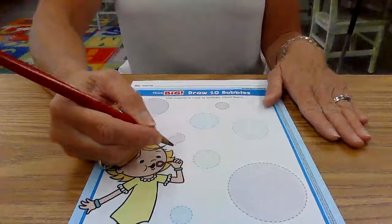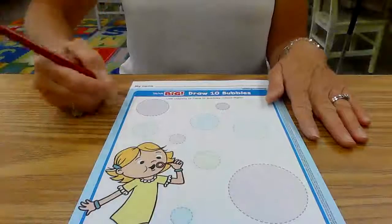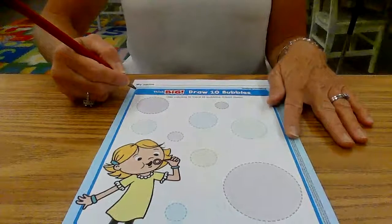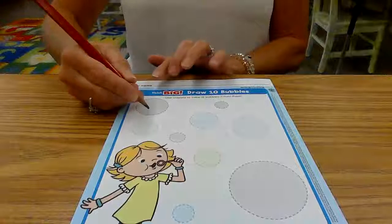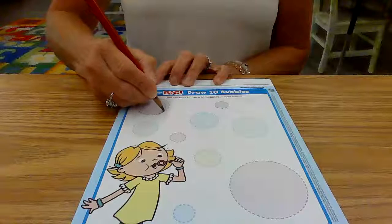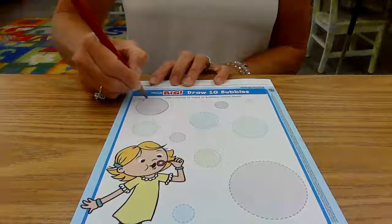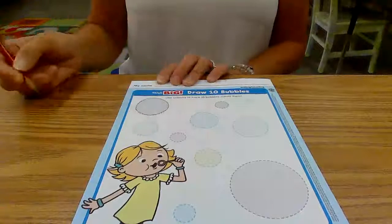So we're going to rest our pencil on our hand. And let's see if we can count 10 bubbles. Let's see. We'll start right up here. We're going to go around all the way around our bubbles the best we can.